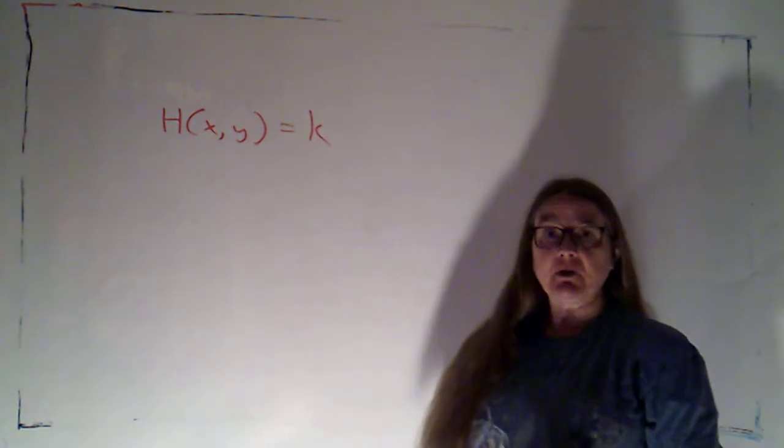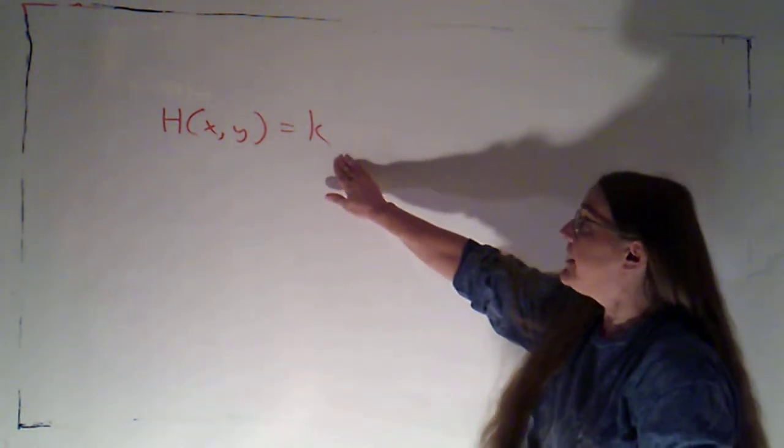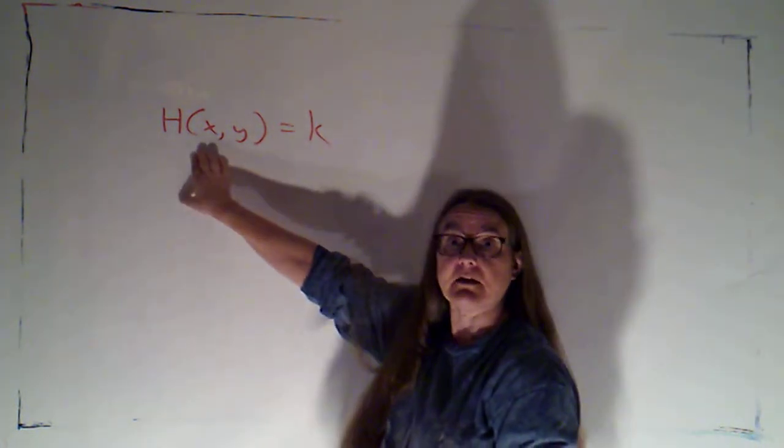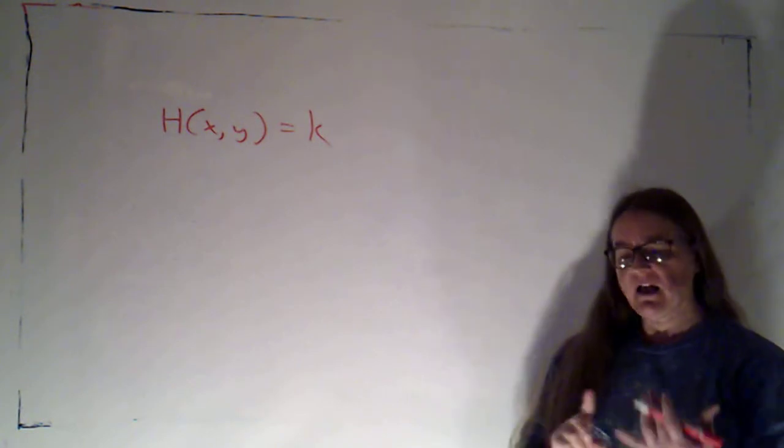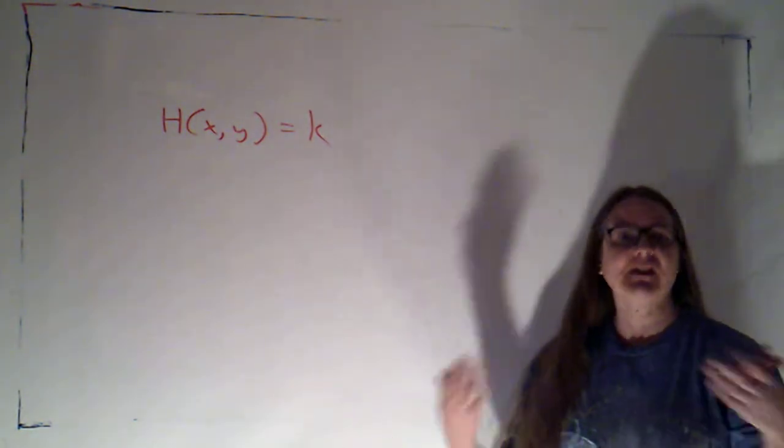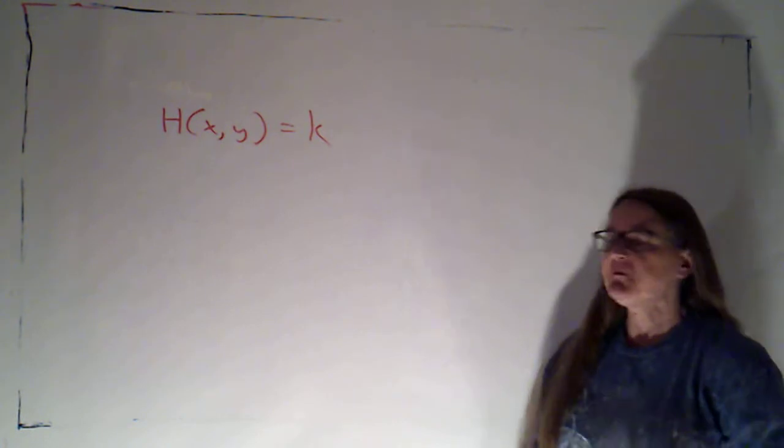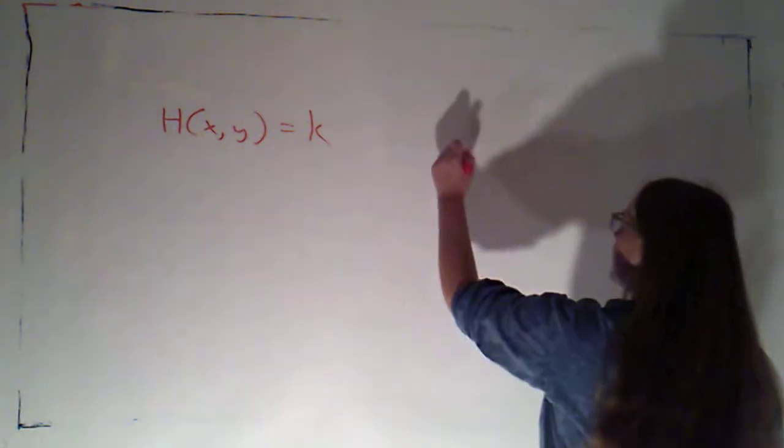So we say that if you have a Hamiltonian system, so that I know my solutions are just the level curves for my Hamiltonian function, that if I have an equilibrium point, it can't be a sink or a source, whether it's a regular sink or source or a spiral sink or source. They sort of say that can't happen. It didn't really address why. I want to take a look at why.